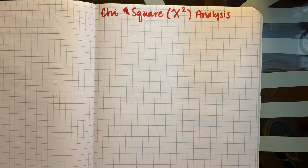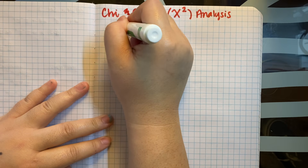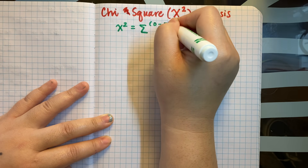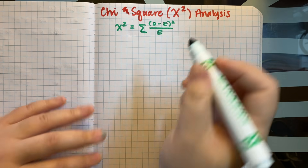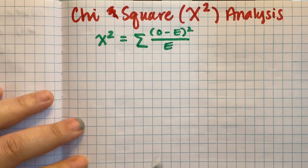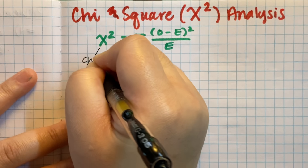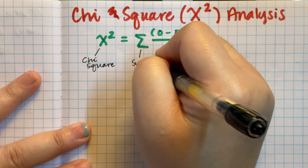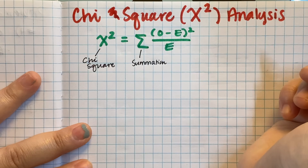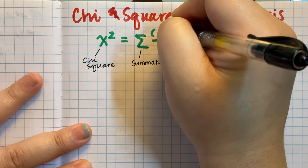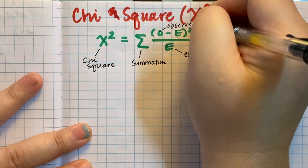I'm going to go through the equation for this and then talk about when and why you use it. Our equation is chi-square equals the summation of observed data minus expected data, squared, divided by your expected data. So we say O minus E, squared, divided by E. E stands for our expected data — what did we expect to occur? And O stands for our observed data — what actually occurred, what data did we collect?